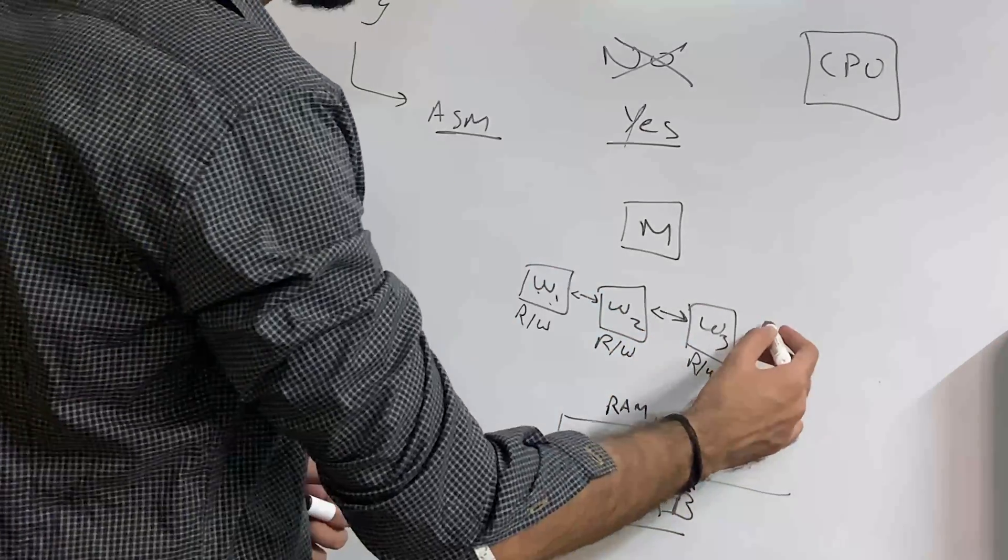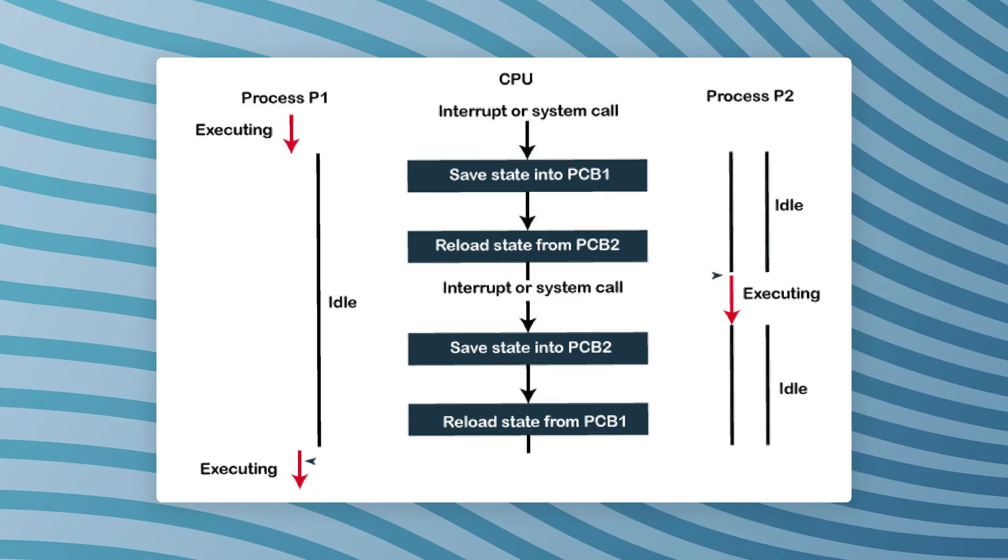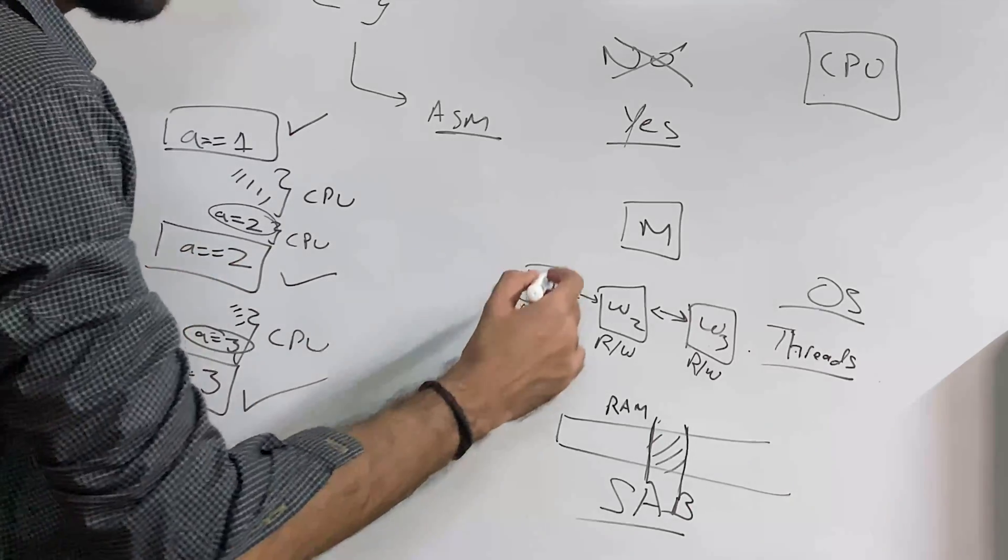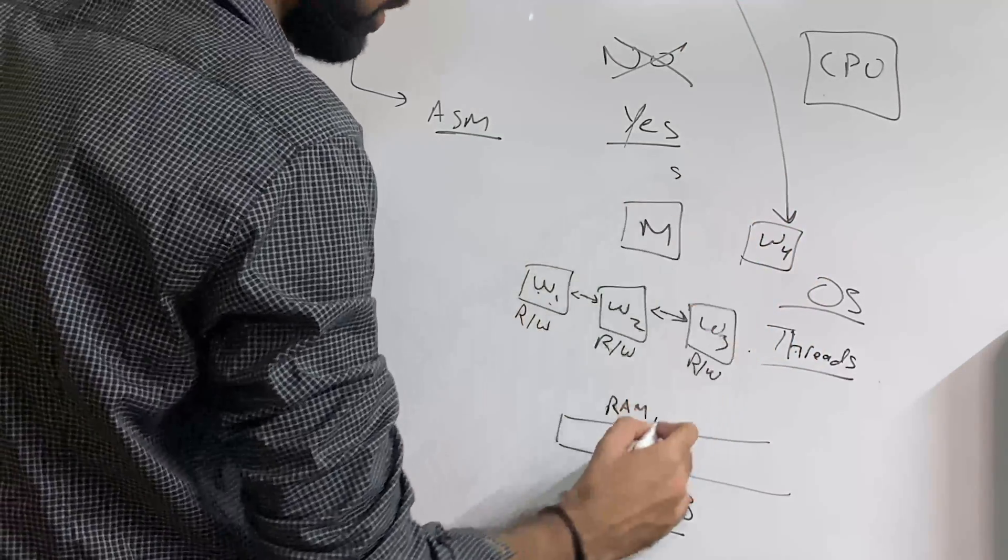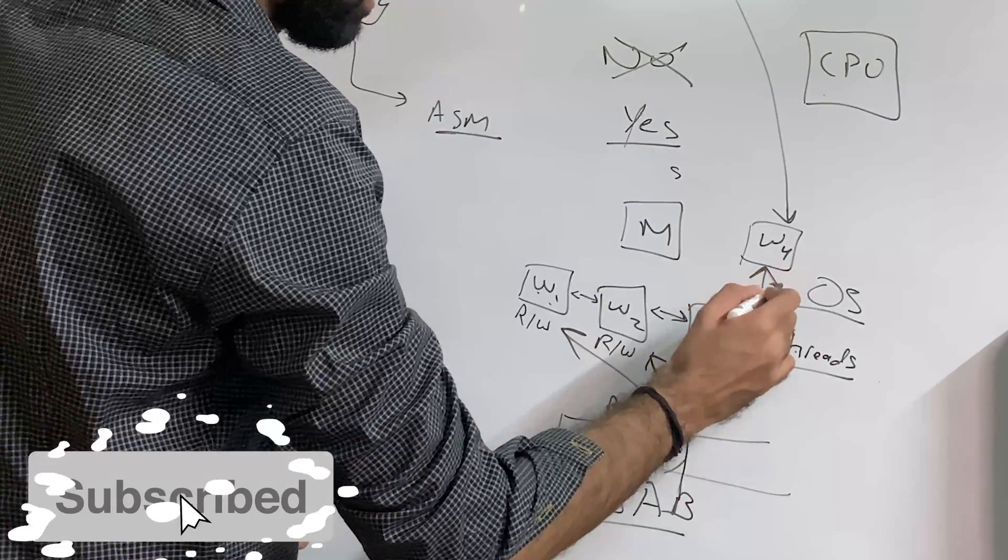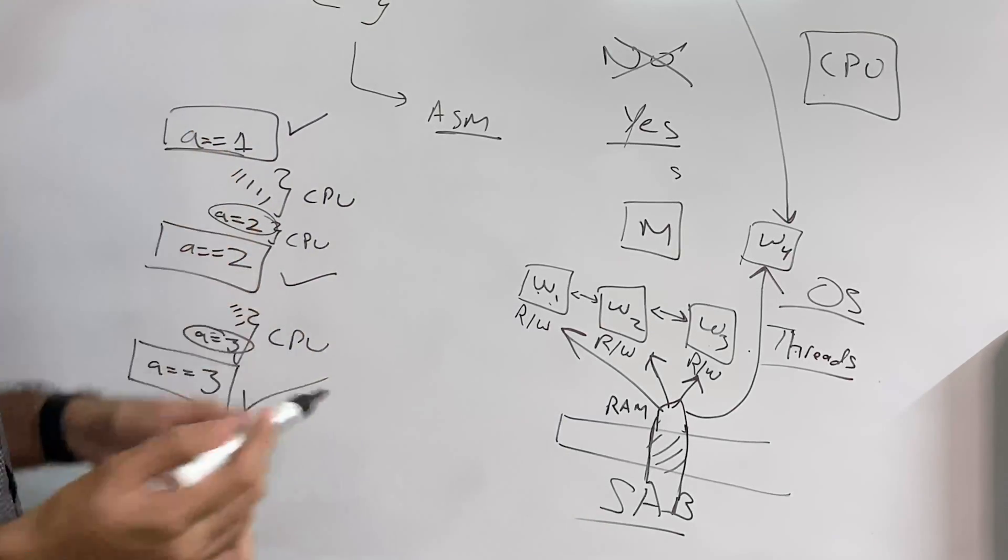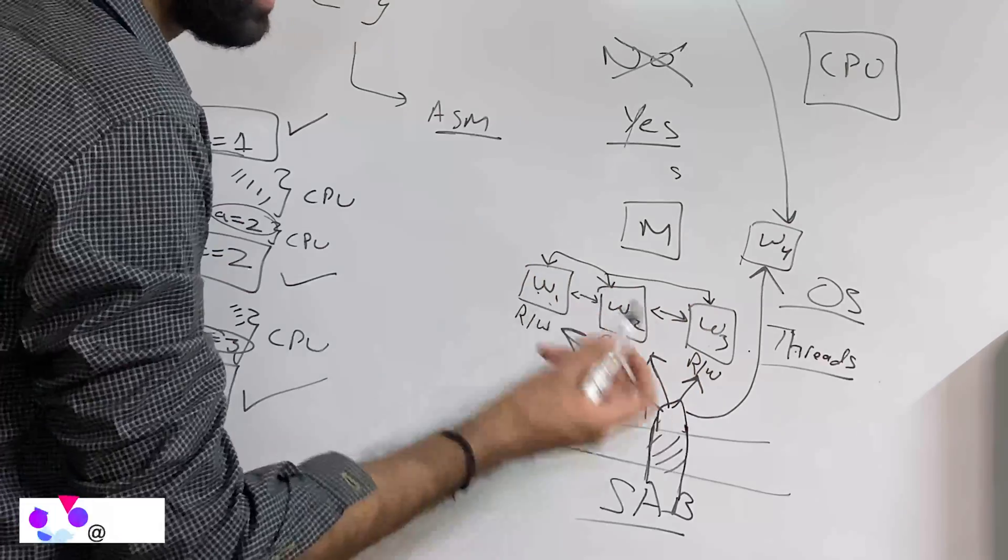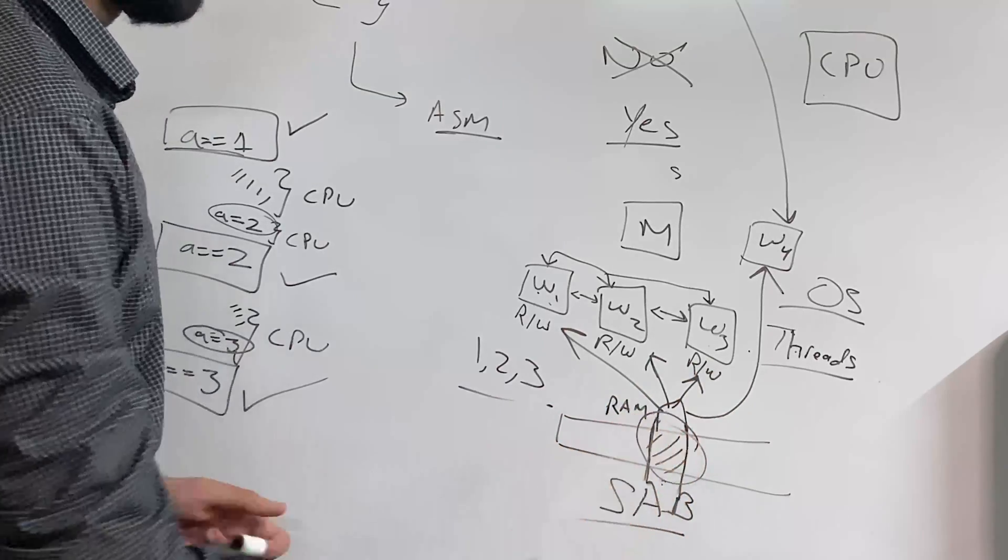The problem here now is that worker one, two, and three might execute and not really might but are executing as different threads. And different threads in operating system means that context switching can happen. So this would actually lead to exactly this case. How? Let's say you have another worker which just checks this condition. It just checks this condition with a shared array buffer with this segment of memory being accessed by this, this, this, and this for checking. Now this worker is executing. Right now it's in the executing mode. So it checks if a is equal to one. And let's assume that a starts with one. Awesome.